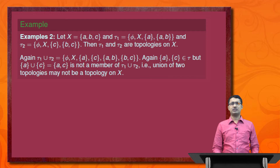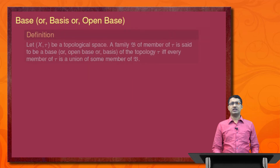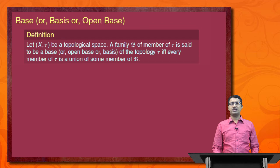Next we introduce another very important definition: a base or basis or open base. Let (X, tau) be a topological space. A family script-B of members of tau is said to be a base or open base or basis of the topology tau if every member of tau is a union of some members of script-B.